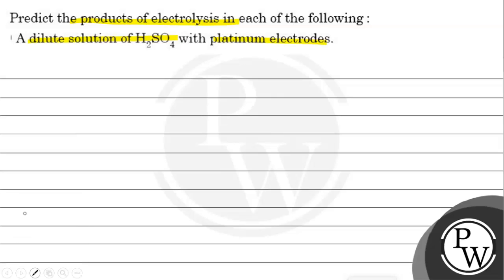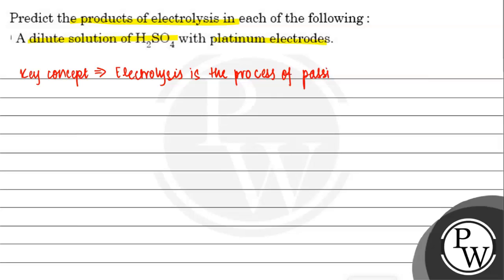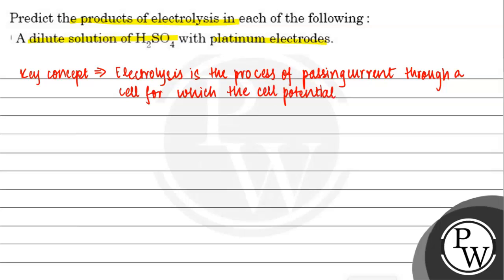Now let's first understand the key concept of this question. The key concept is: electrolysis is the process of passing current through a cell for which the cell potential is negative, and causing oxidation and reduction to occur.